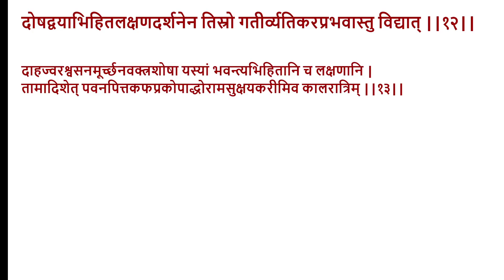Sub-varieties can be made based on Dosha combinations — Vatapita, Kaphaja, and so on. The Tridoshaja variety presents with prominent systemic symptoms: fever (Jwara), respiratory distress, and unconsciousness — features of severe toxemia. Sushila considered patients showing signs of toxemia with their inflammatory pathology as a fatal condition — Asukshayakariyam eva kaloratrim — prognosis is extremely poor, potentially fatal.